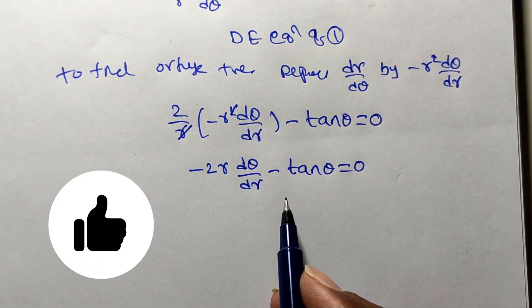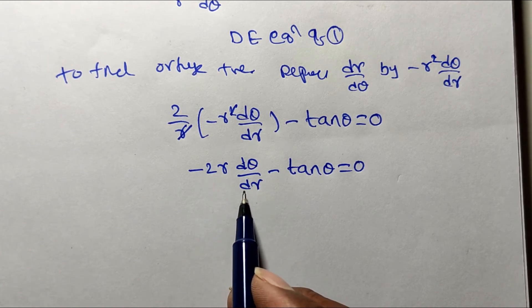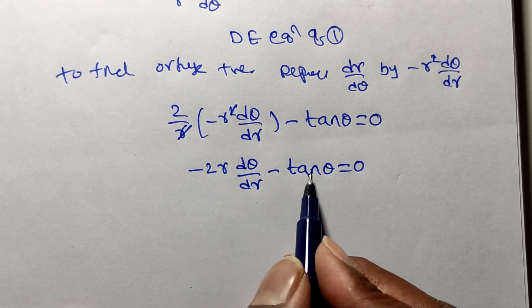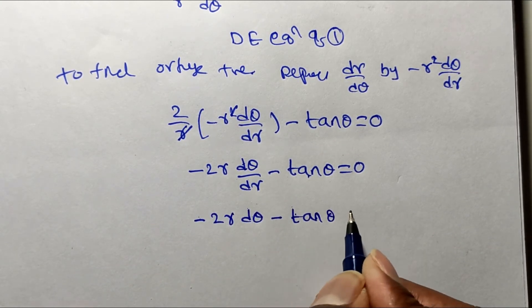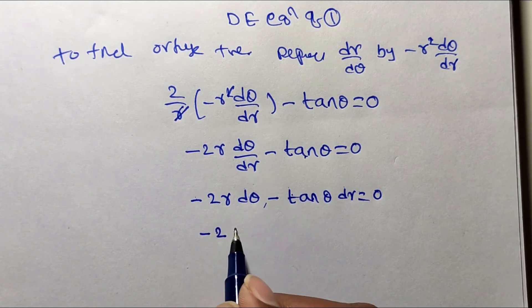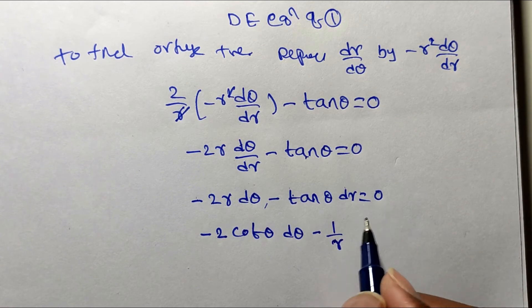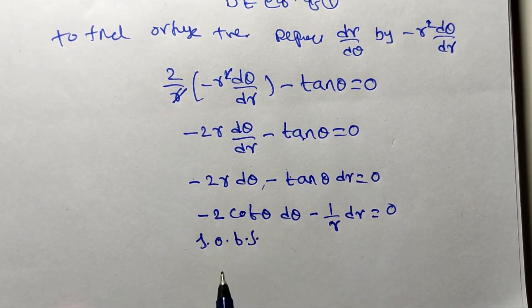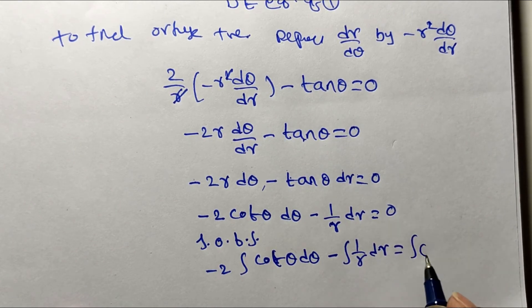Applying the variable separable method: we need dθ terms on one side and dr terms on the other. Rearranging: −2r · dθ = tan θ · dr, then cross-multiplying and dividing gives −2 cot θ dθ − (1/r) dr = 0. Integrating both sides: −2 ∫cot θ dθ − ∫(1/r) dr = constant.